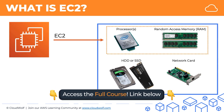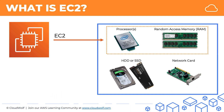EC2 is the combination of the processor and the random access memory. If you keep this visual in mind, it will help you remember how to think about EC2. EC2 is the little engine that crunches all the numbers inside your AWS architecture.